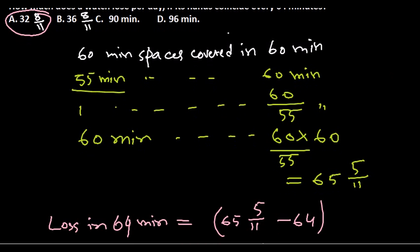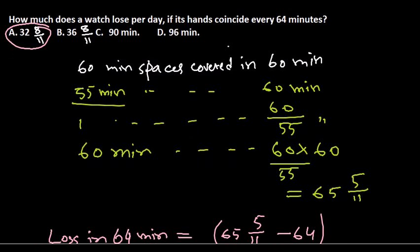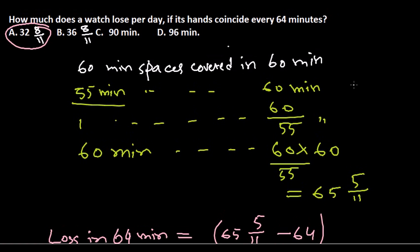The key thing to solve this problem is: in 60 minutes' space it normally covers 60 minutes, but in 55 minutes' space it covers 60 minutes. Then calculate for one minute and for 60 minutes.